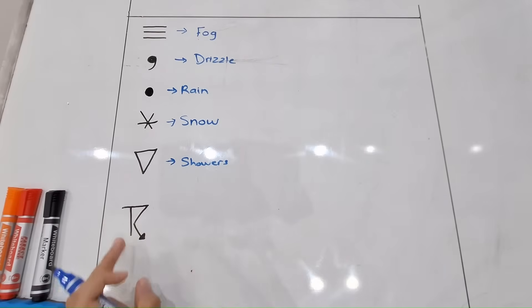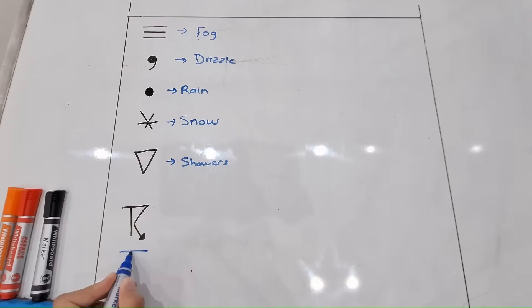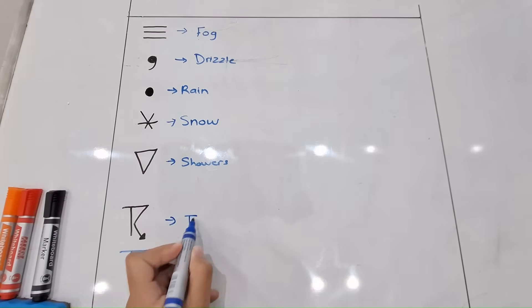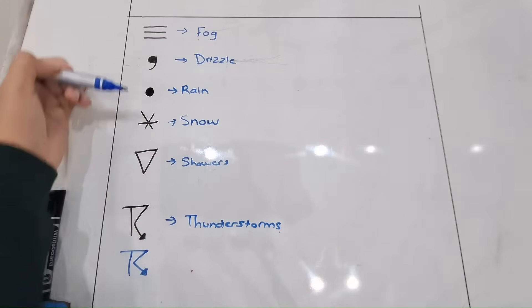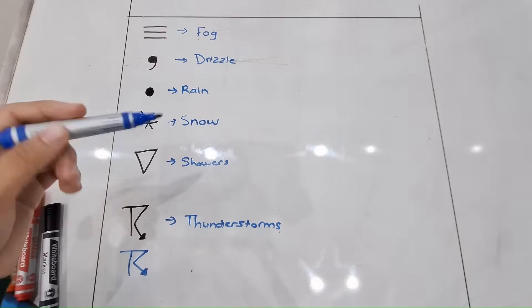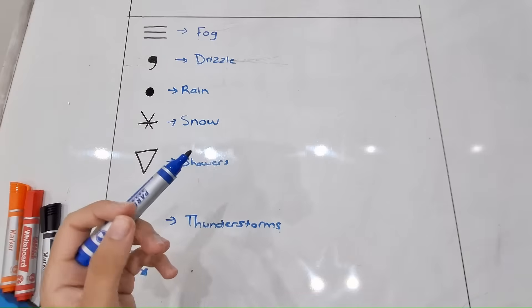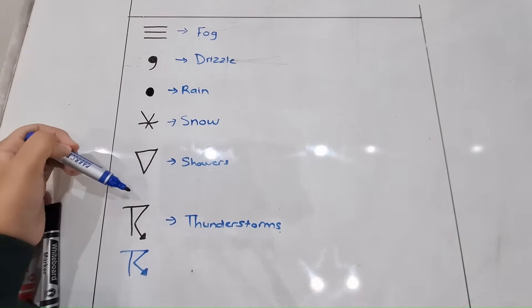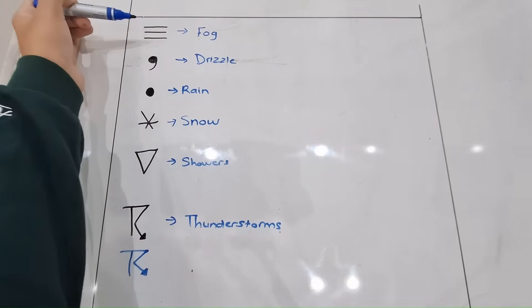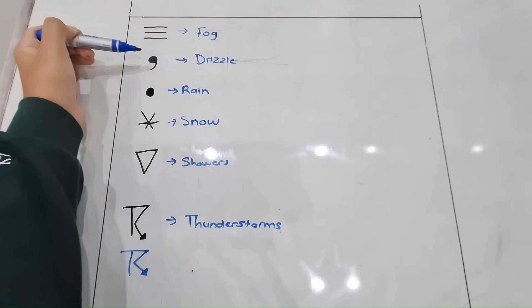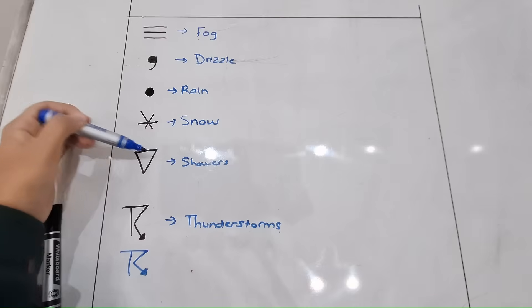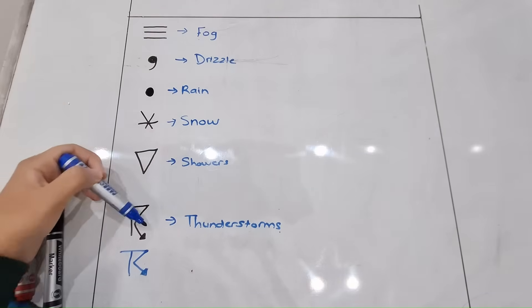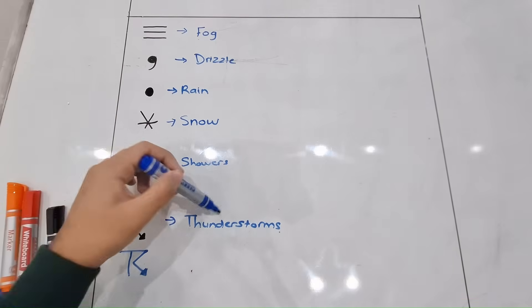The last symbol is a complicated-looking one, but if you break it down it's basically like a letter T with a crooked arrow — and this represents thunderstorms. So to recap the six symbols: three parallel lines means fog; an inverted comma means drizzle; a dot means rain; a snowflake or asterisk means snow; an upside-down triangle means showers; and the T with a crooked arrow means thunderstorms.